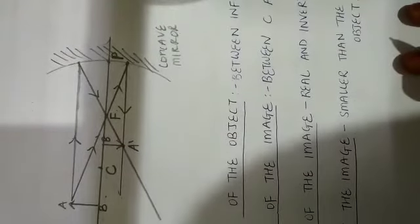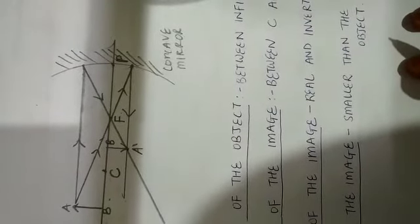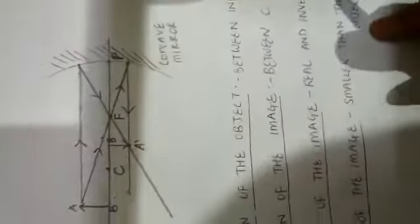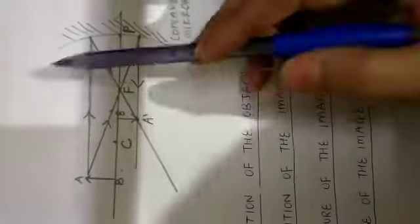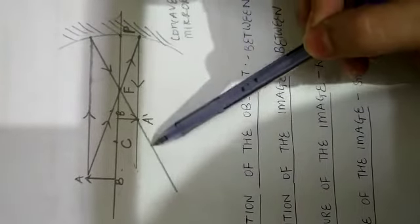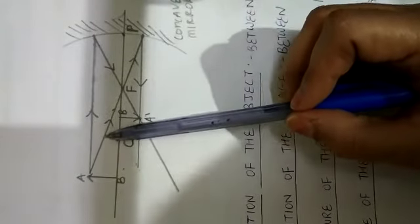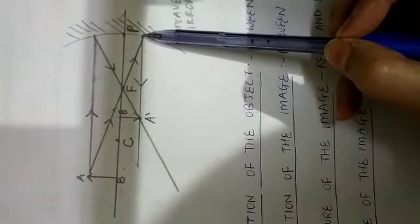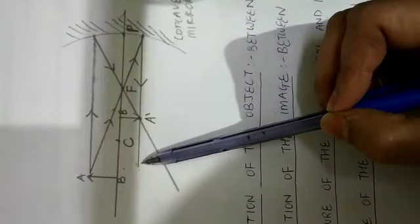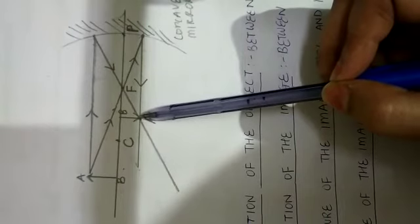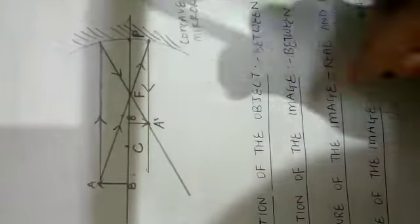I hope you all have understood the concept of how to draw the ray diagram. This is very easy — you just have to follow the three rules and draw the ray diagram, and as per the ray diagram you write down your conclusion of these four points. The first rule: incident ray parallel to the axis reflects through the focus. The second rule: incident ray through the focus reflects parallel to the axis. These two reflected rays meet at this point, which is your image A' B'.